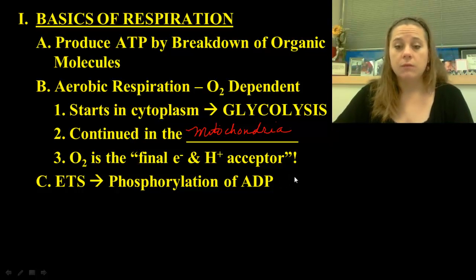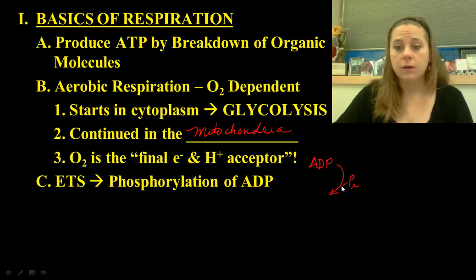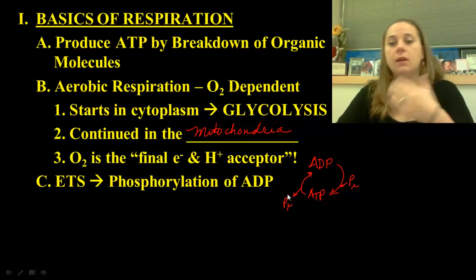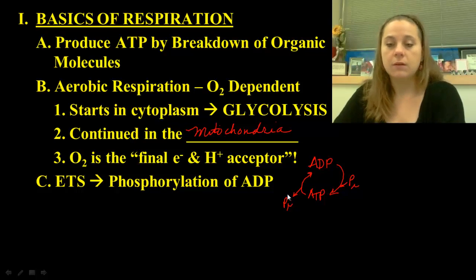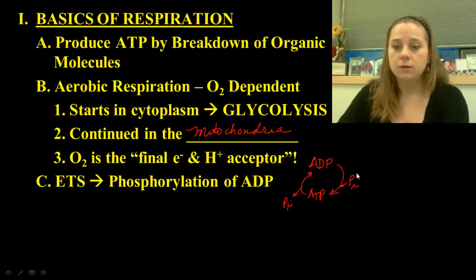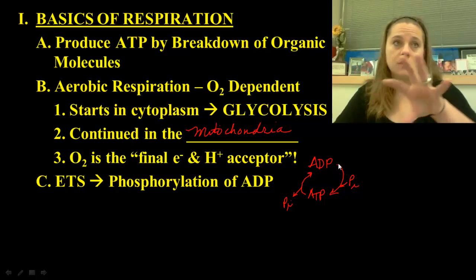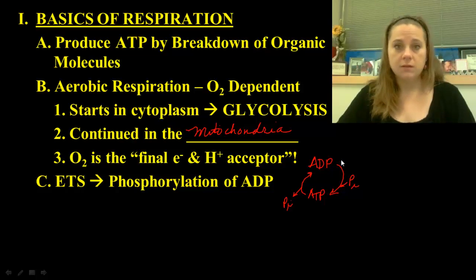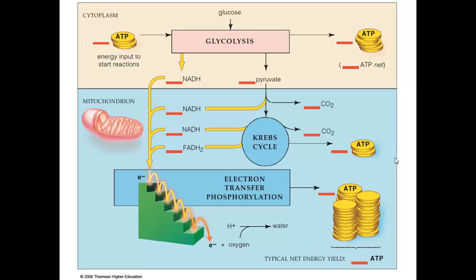Remember the ATP cycle: you've got ADP, you phosphorylate it with a phosphate and make ATP. Want to use the ATP? Pop off a phosphate and you get ADP again — it constantly cycles. That phosphorylation — the addition of a phosphate to the ADP molecule — is the ultimate piece that happens during the electron transport system.